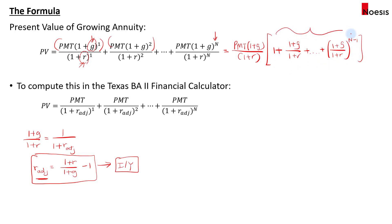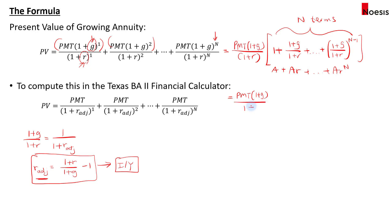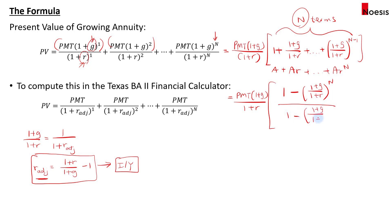Treating this as a sum of a geometric progression — a plus aR plus all the way up to aR to the power of n — what we get equals PMT times (1+G)/(1+R), multiplied by [1 minus the ratio (1+G)/(1+R) to the power of n terms] over [1 minus the ratio (1+G)/(1+R)].